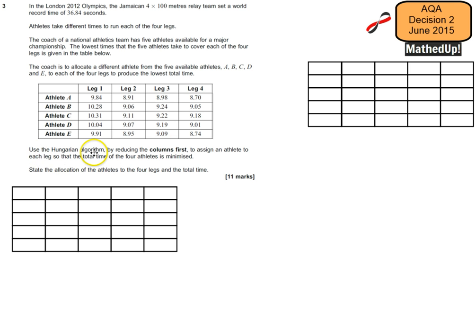We're going to use the Hungarian algorithm by reducing the columns first to assign an athlete to each leg so that the total time of the four athletes is minimized. We're then going to state the allocation of the athletes to the four legs and the total time.